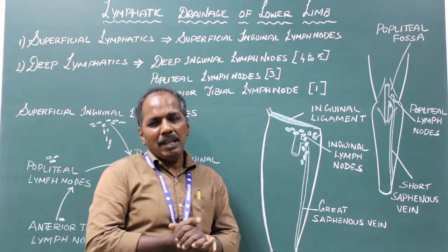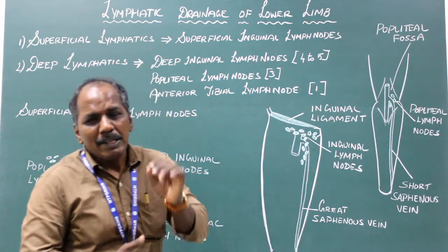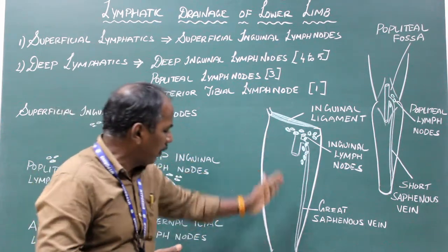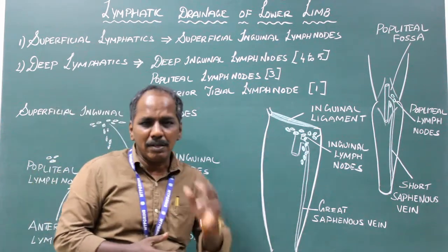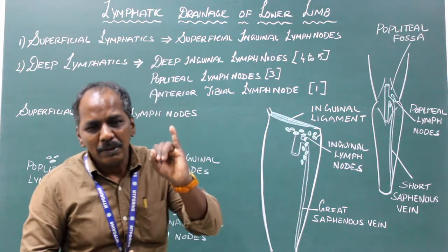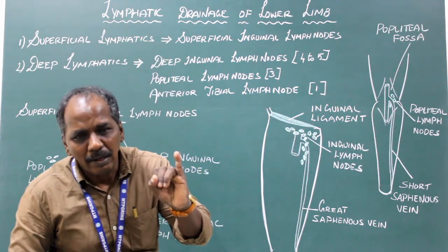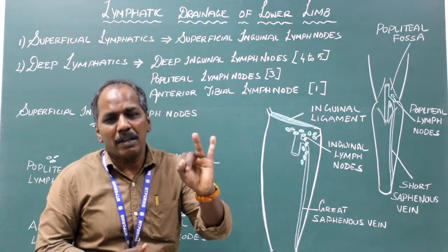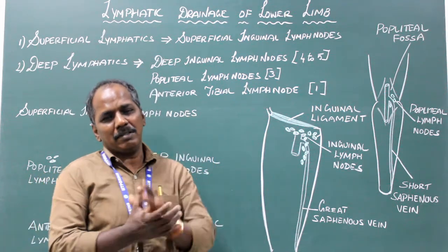The vertical group drains the skin and fascia of the lower limb, except the gluteal region and the territory of the short saphenous vein.